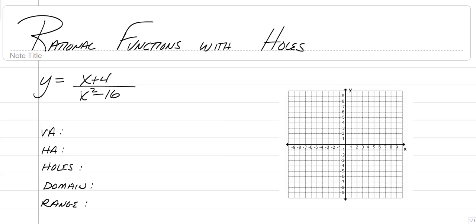Hey, everybody, welcome back to another video on rational functions. This time we're gonna graph them with holes. What is a hole? A hole is actually a spot on a graph where one individual point doesn't work — it's continuous everywhere else except for that one point. So how do we find them? How do we graph them? What do we do with them?